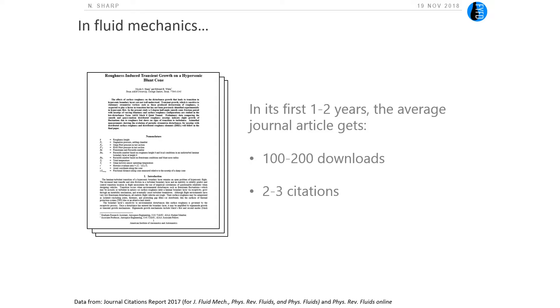In fluid dynamics, at least, if you look at how a typical paper performs in one of our leading journals, in its first one to two years you might get 100 or 200 downloads. And if you're lucky, you'll get a couple of citations. That means there's a handful of people in the scientific community who are reading and appreciating your work. But this does not a New York Times bestseller make.